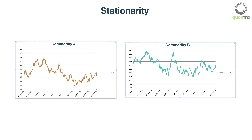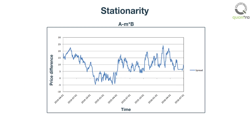Consider two price series, A and B. If the linear combination or spread of A and B is stationary, then the two price series A and B are said to be co-integrated with each other.